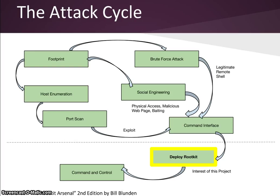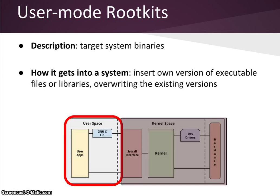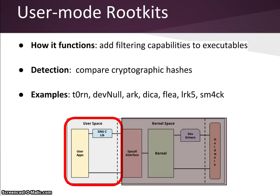There are several different types of rootkits. The two main types we will be discussing are user mode and kernel mode rootkits. User mode rootkits modify the source code of operating system executable files or libraries that interact with the kernel on the user's behalf. They target system binaries such as lsps and netstat. The attacker overwrites these existing binaries with their own malicious versions. This overwrite can be performed by a simple copy command. User mode rootkits add filtering capabilities to executables so users and system admins receive modified output. For example, the output of a command like netstat can be altered to hide the port that the attacker is using as a backdoor.